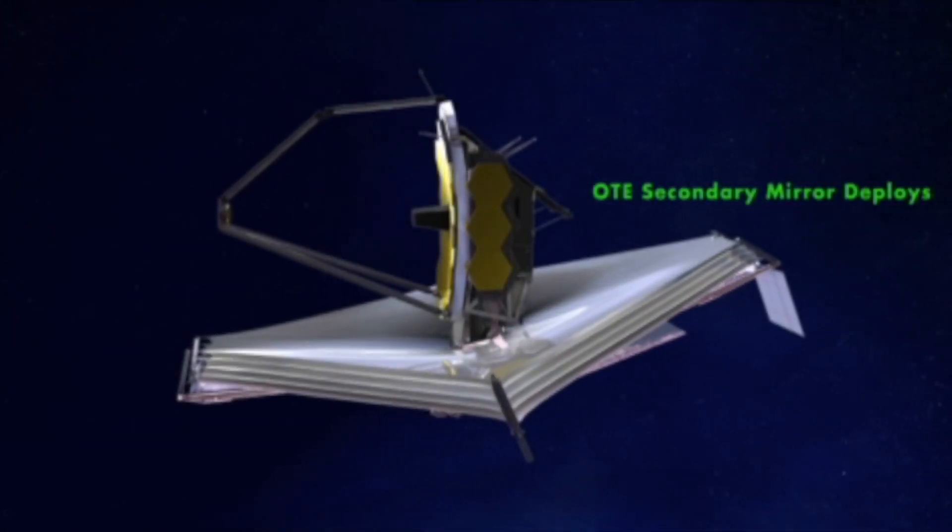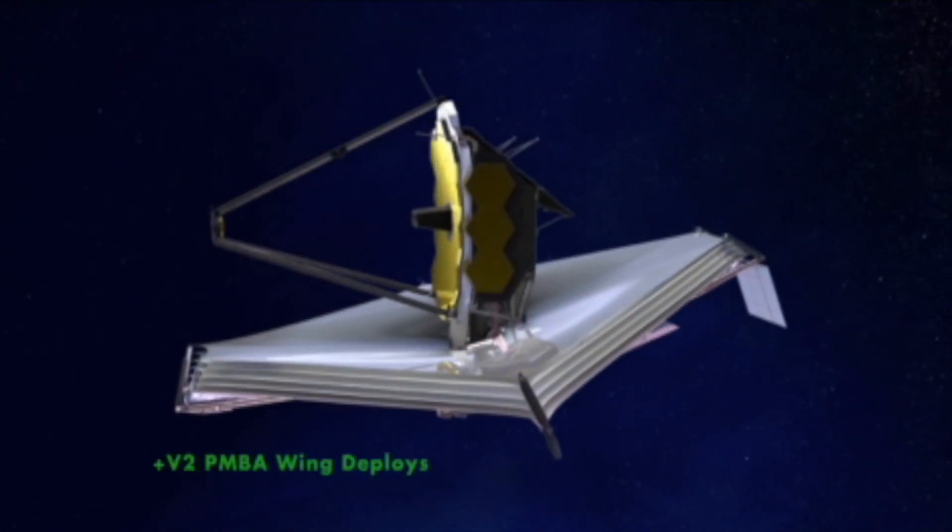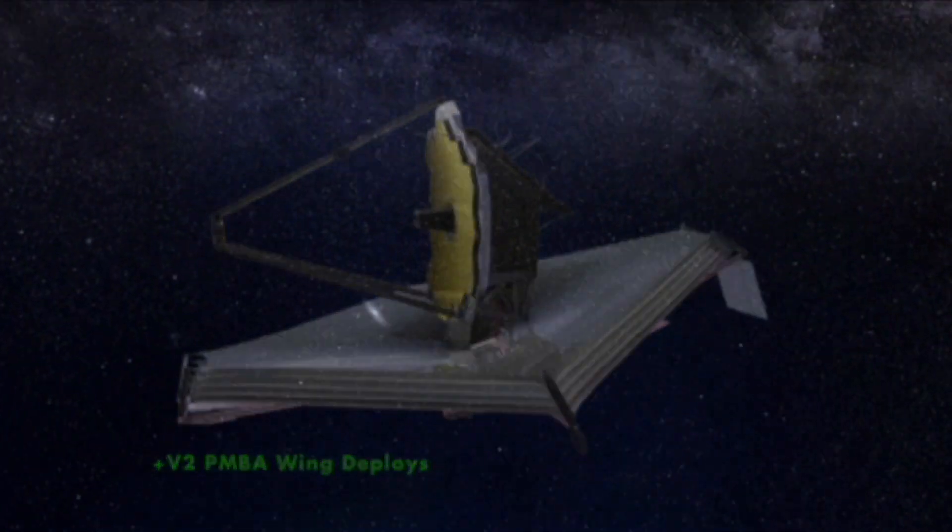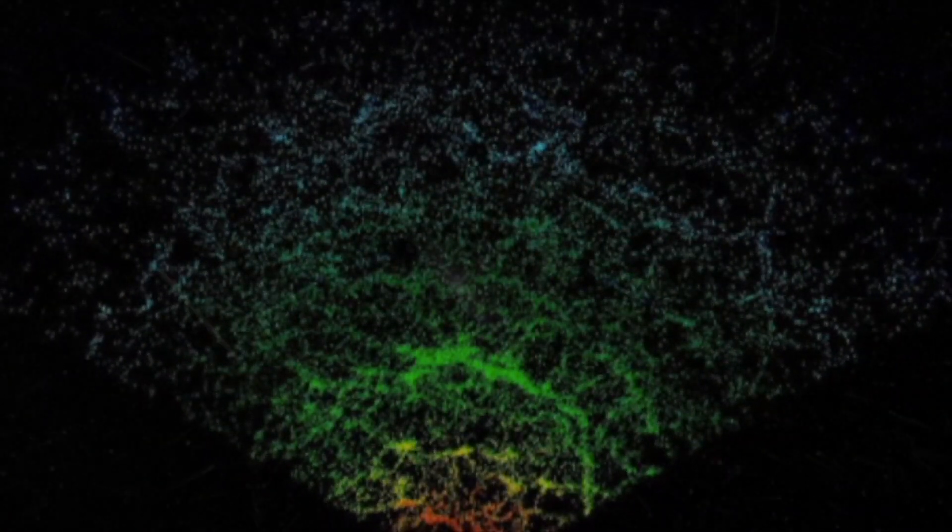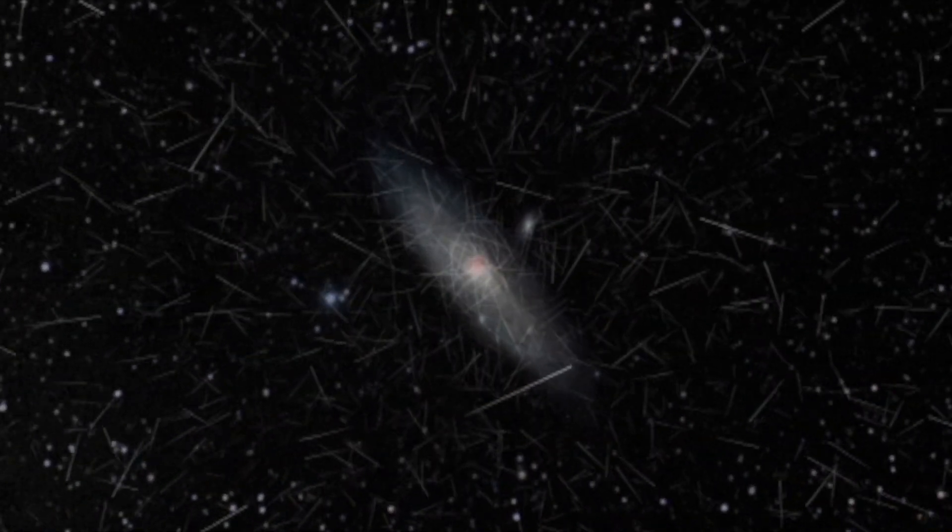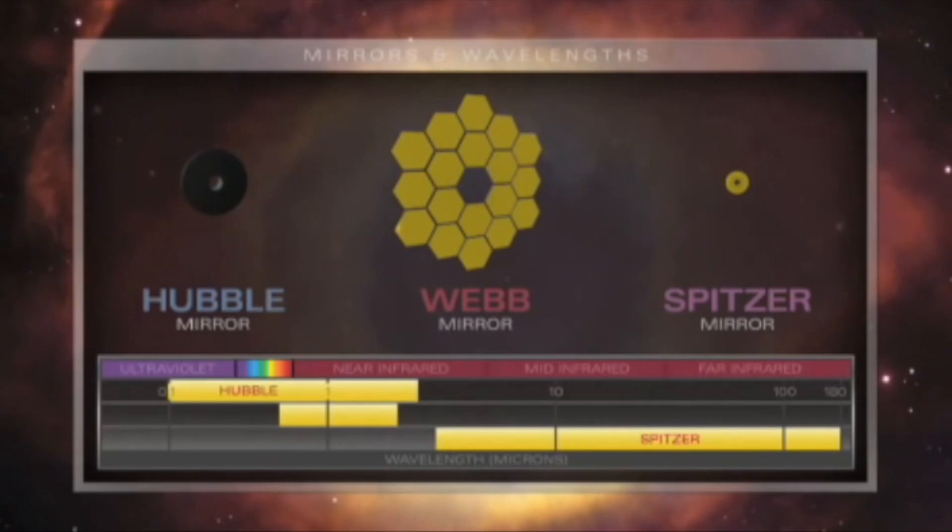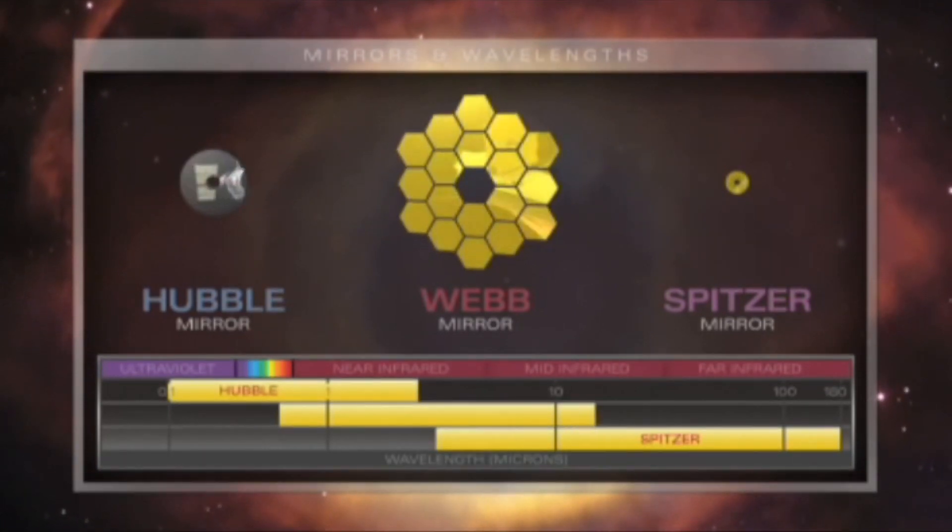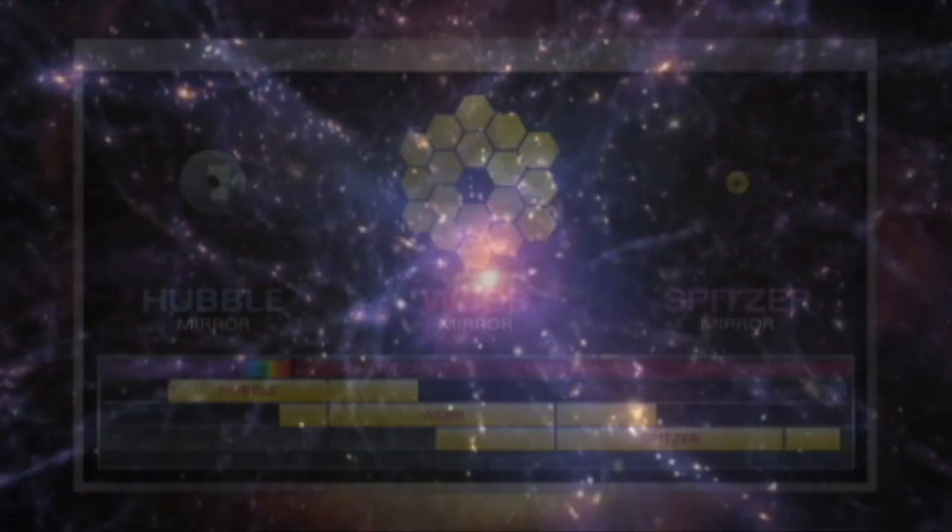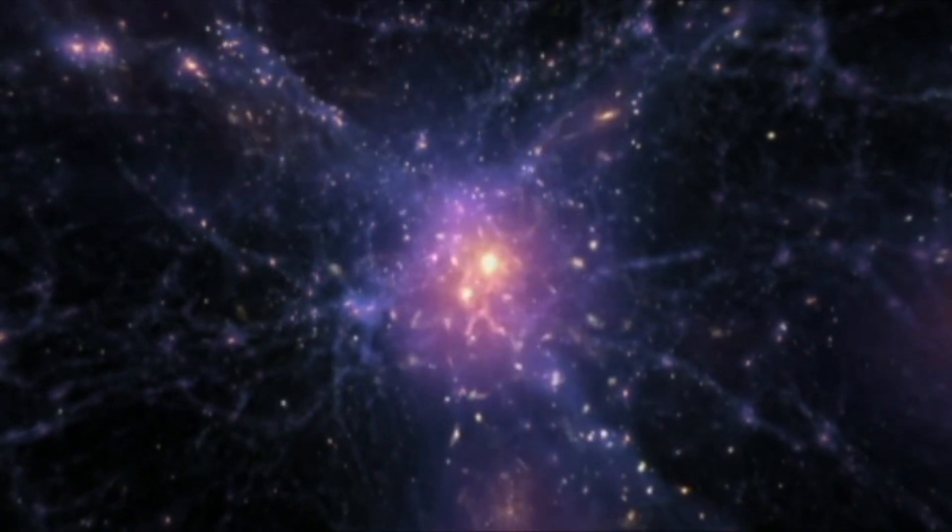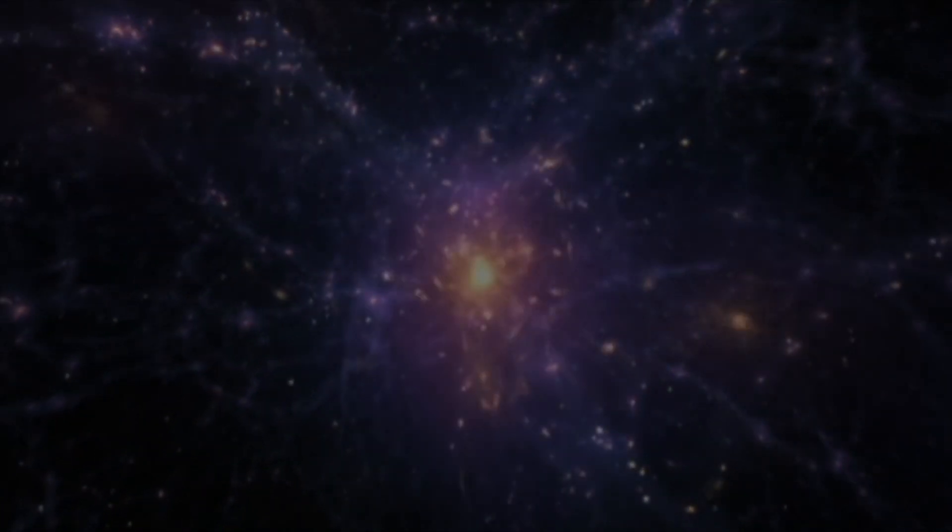JWST will be able to observe galaxies back to their earliest precursors so that we can understand their growth and their morphological and metallicity evolution. The James Webb Space Telescope will provide imaging and spectroscopy over a bright range of infrared wavelengths to uncover many of these mysteries of the very first galaxies ever to form in the Universe.